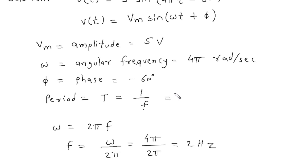So from this, this will be 1 upon 2. So this will be 0.5. The unit of period is second.